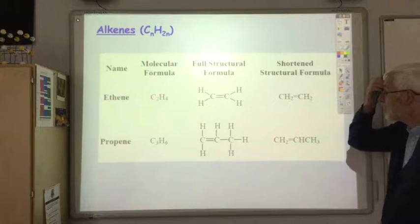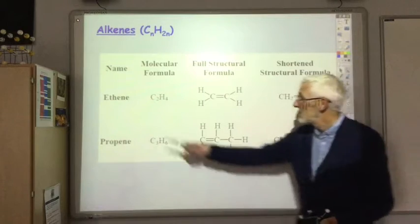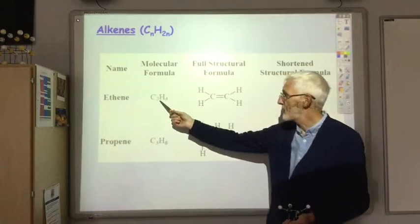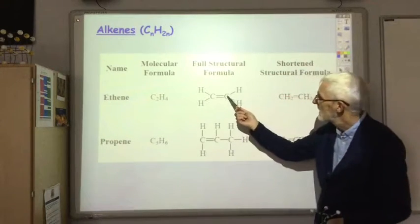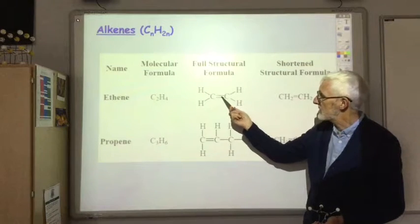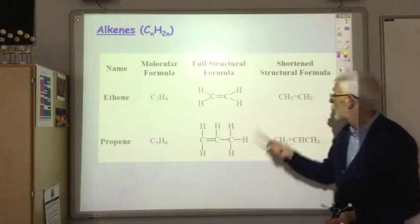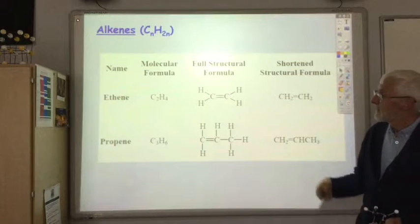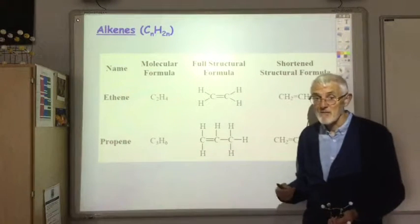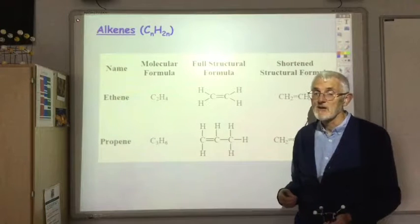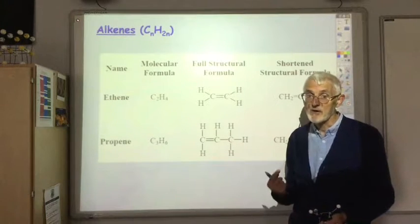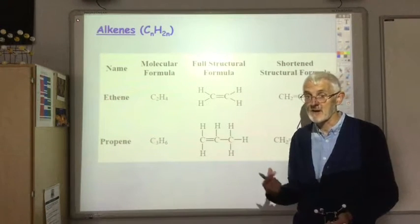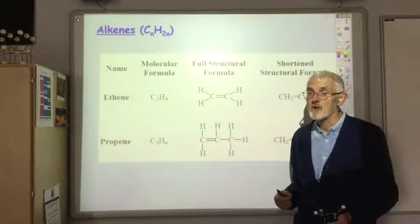The first member of the alkene is ethene, molecular formula C2H4. This is its full structural formula with the carbon-carbon double bond and this is its shortened structural formula. Notice the first member has two carbons - you can't have an alkene with one carbon because you can't have a carbon-carbon double bond when you've only got one carbon.